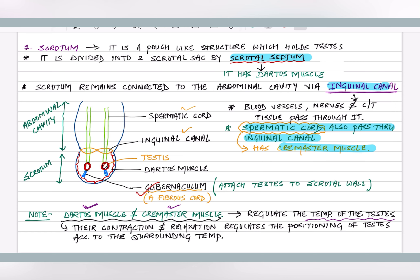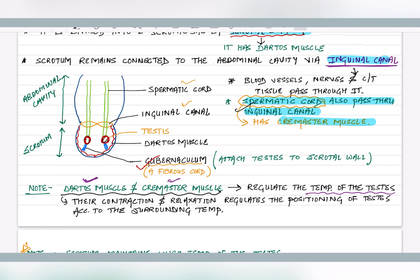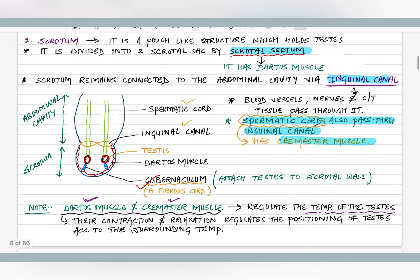The scrotum is connected to the abdominal cavity via the inguinal canal. The spermatic cord passes through the inguinal canal. The spermatic cord has cremaster muscle. So, the scrotum is connected to the abdominal cavity via the inguinal canal, and through the inguinal canal passes a cord called the spermatic cord, which has cremaster muscle.